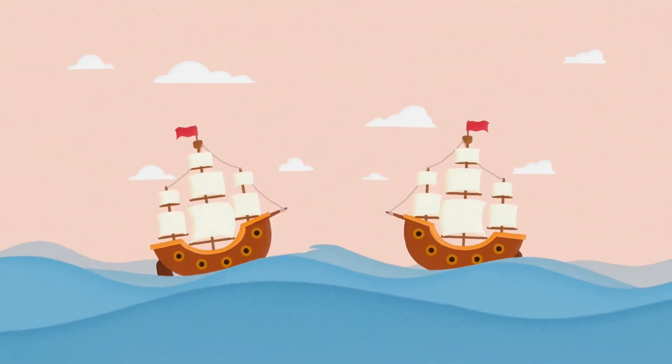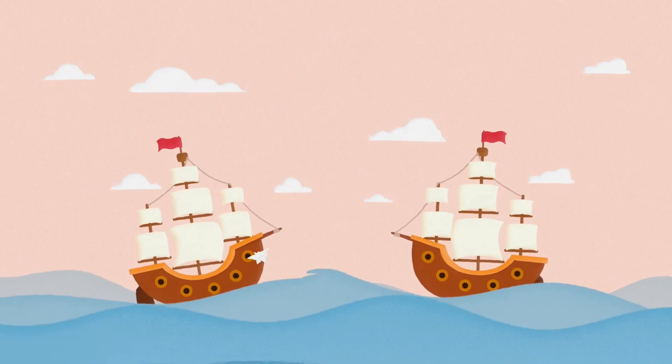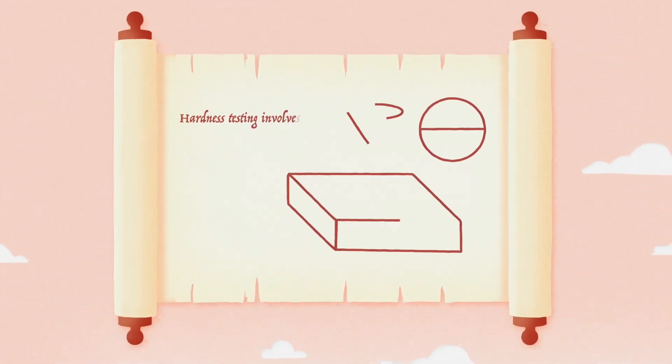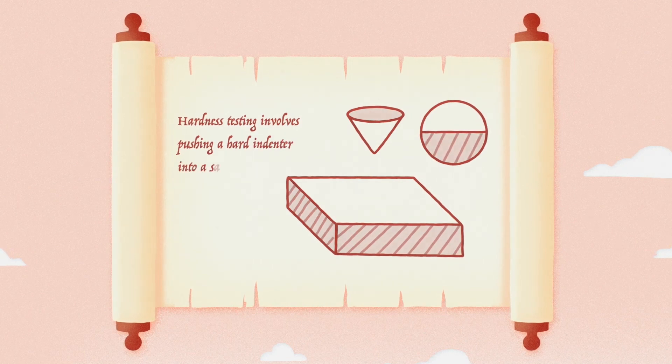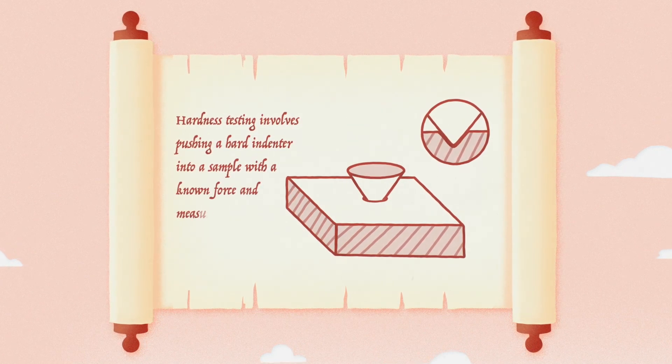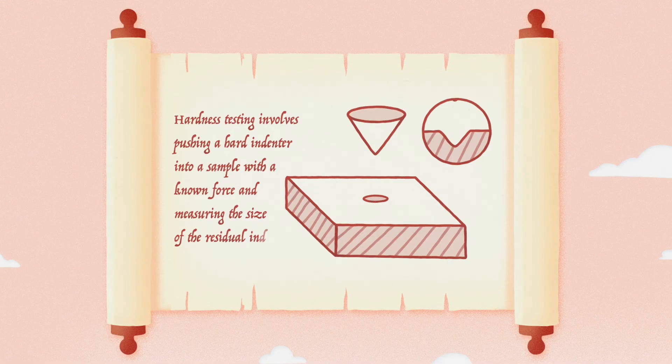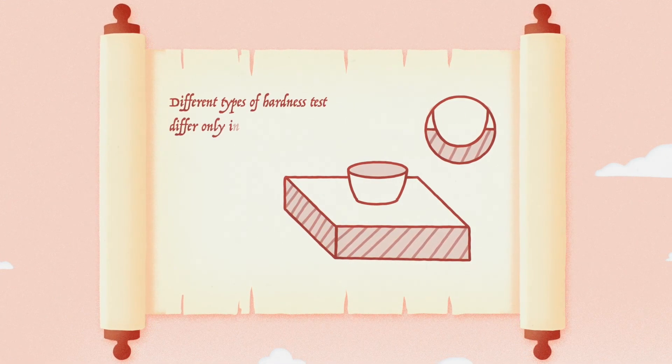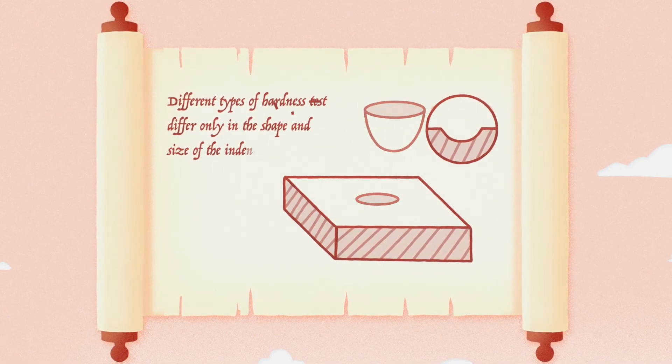The oldest is the common hardness test, dating back to 1722. Hardness testing involves pushing a hard indenter into a sample with a known force and measuring the size of the residual indent. Different types of hardness tests differ only in the shape and size of the indenter.